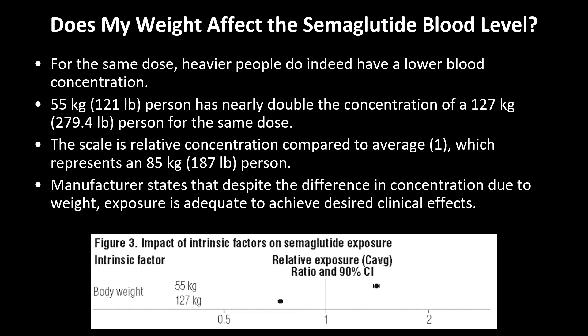Just to give you an idea of what these numbers are on the very bottom — these are relative concentrations. The midpoint value of one is the exact average concentration found in the study over the duration of dosing for that semaglutide. Below this is obviously a lower than average concentration; above this is higher than average concentration. So in the case that you may be heavier than the average patient, you may need to move up to a higher dose to achieve the desirable weight loss. Always speak to your physician before making any decisions like these, of course.